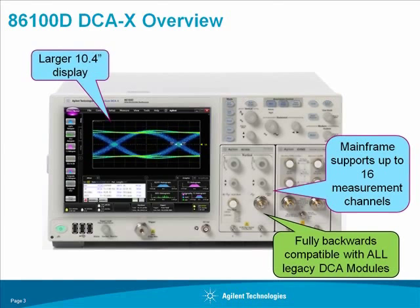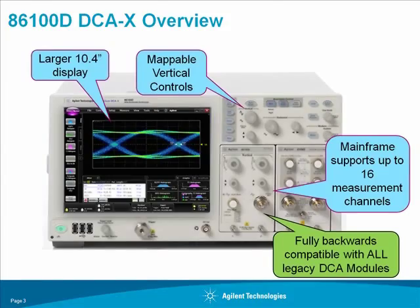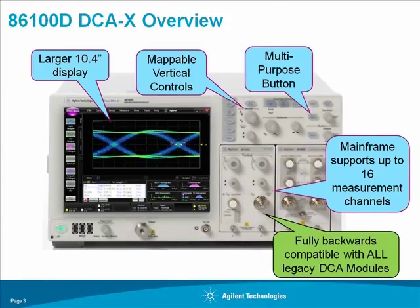It features a larger display than earlier 86100 series oscilloscopes. It also provides vertical gain and offset controls that may be mapped to any channel or math function. There is a multi-purpose button on the front panel that allows users to print the display, save a waveform, or even run a macro with a touch of one button.